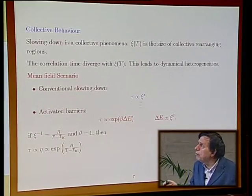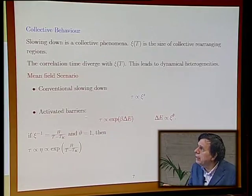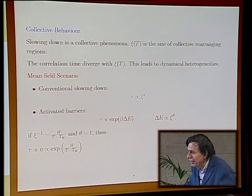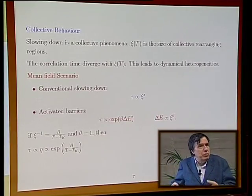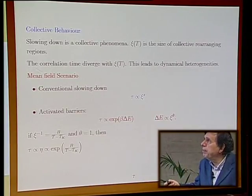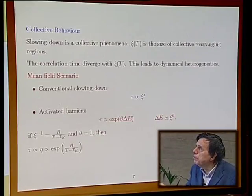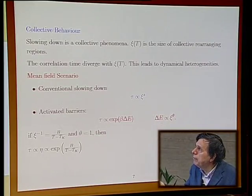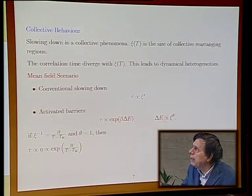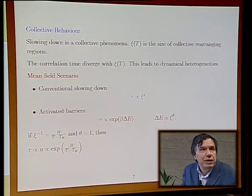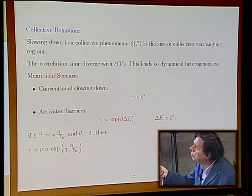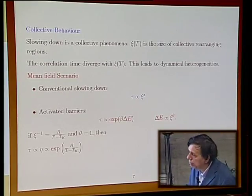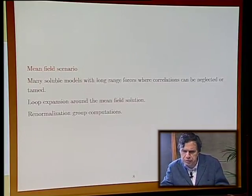After, there will be a region where everything is dominated by tunneling barriers. Just because we have a thermal tunnel activated barrier, you would expect that the correlation time behaves as exponential of a power of the correlation length. There's a lot of critical exponents that one has to understand in this region.